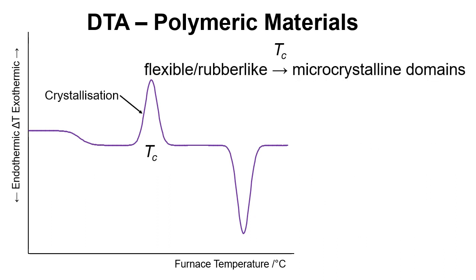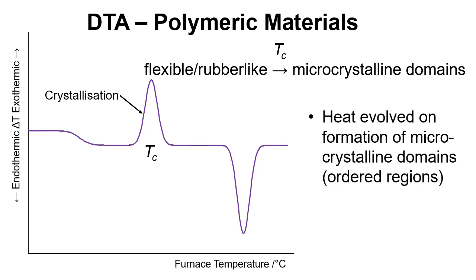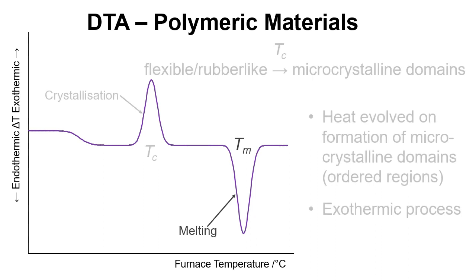Okay, crystallization. We go from a flexible rubber-like material to a material that has microcrystalline domains. Heat is evolved on the formation of microcrystalline domains where we get these ordered regions. So we get this exothermic peak and it's an exothermic process.